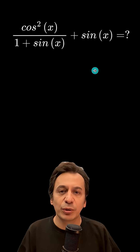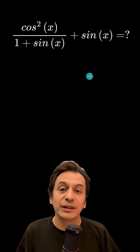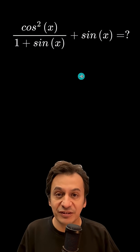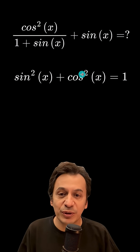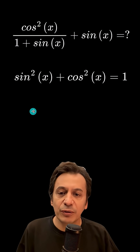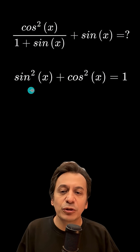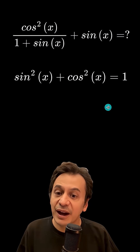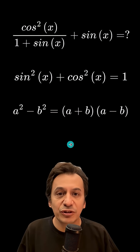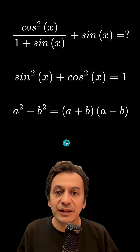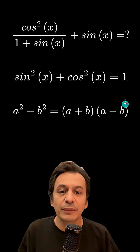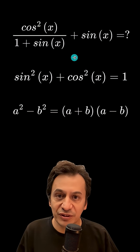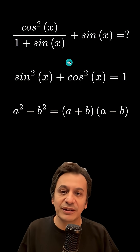To be able to solve a trigonometry question like this, we need to know some basic identities. One of them is sin squared x plus cosine squared x equals 1, and the other is the difference of squares identity that we know. We will solve the question here using these. Let's get started.